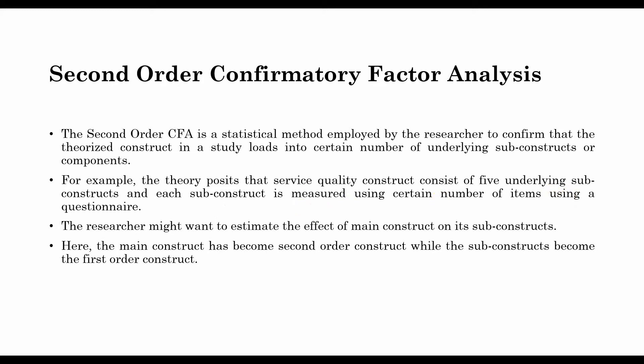Another common example is Corporate Social Responsibility, which has four or five sub-dimensions: Economic Dimension, Legal Dimension, Ethical Dimension, and Philanthropic Dimension. Each of those dimensions is measured using different indicators. The researcher might want to estimate the effect of the main construct on its sub-constructs. Here the main construct becomes the second-order construct while the sub-constructs become the first-order constructs.